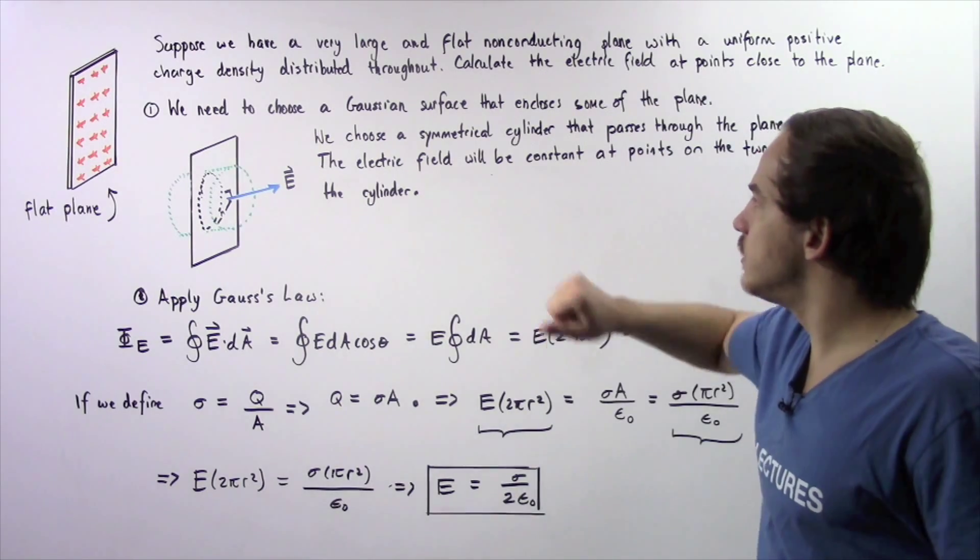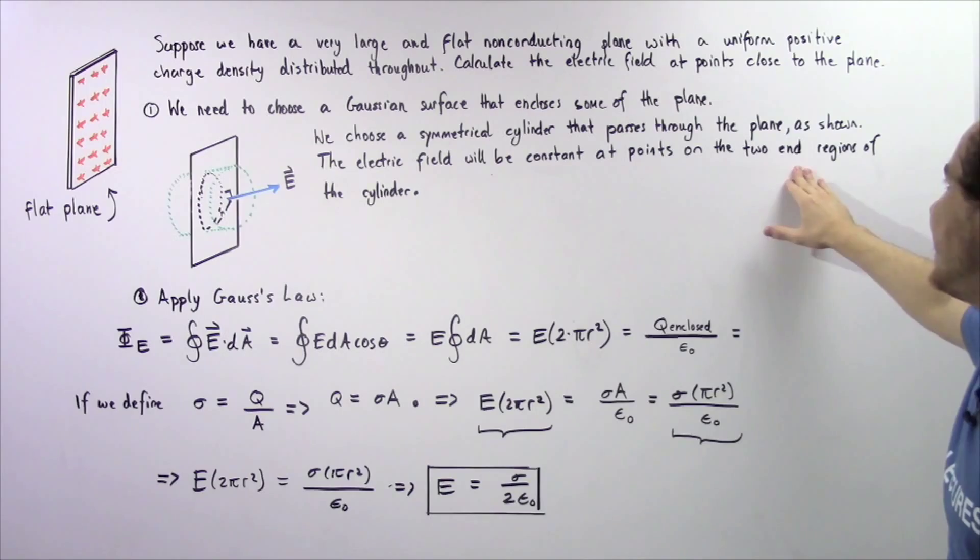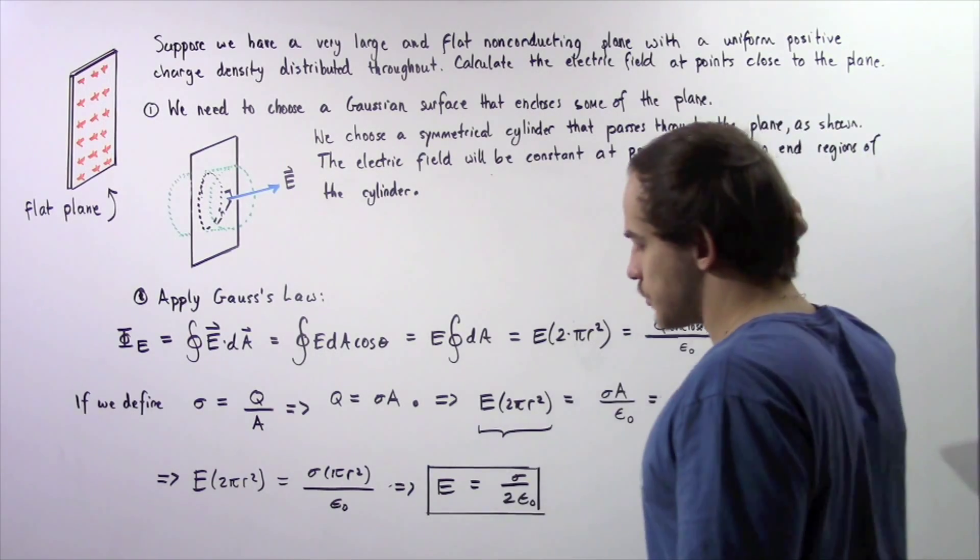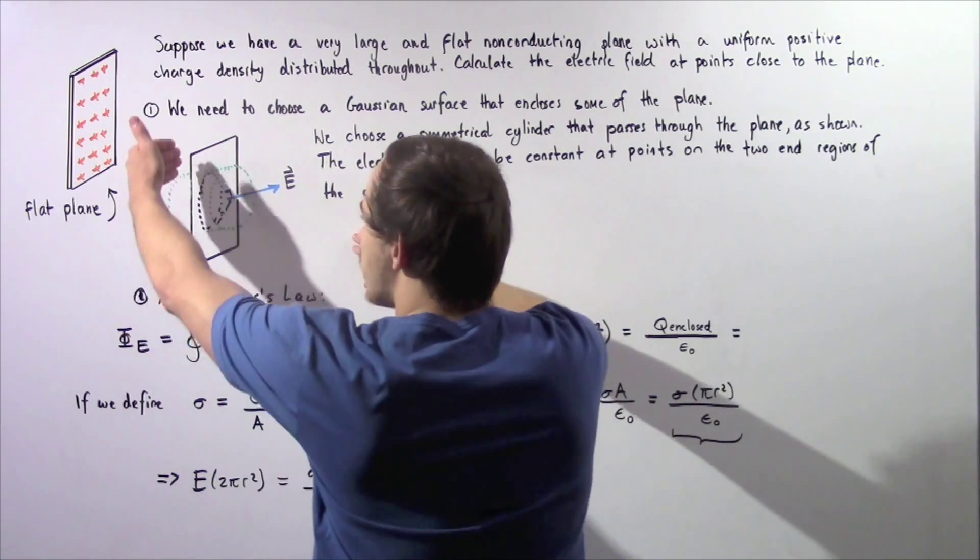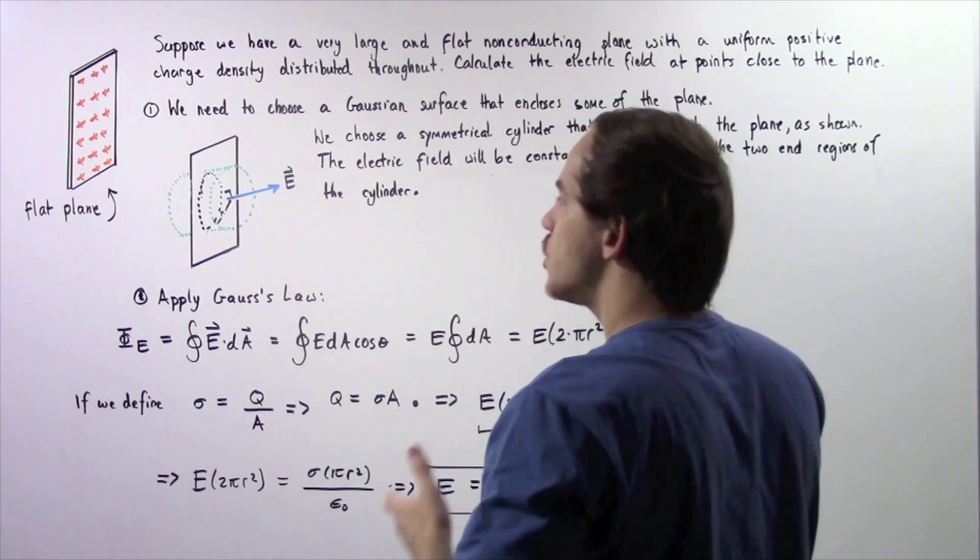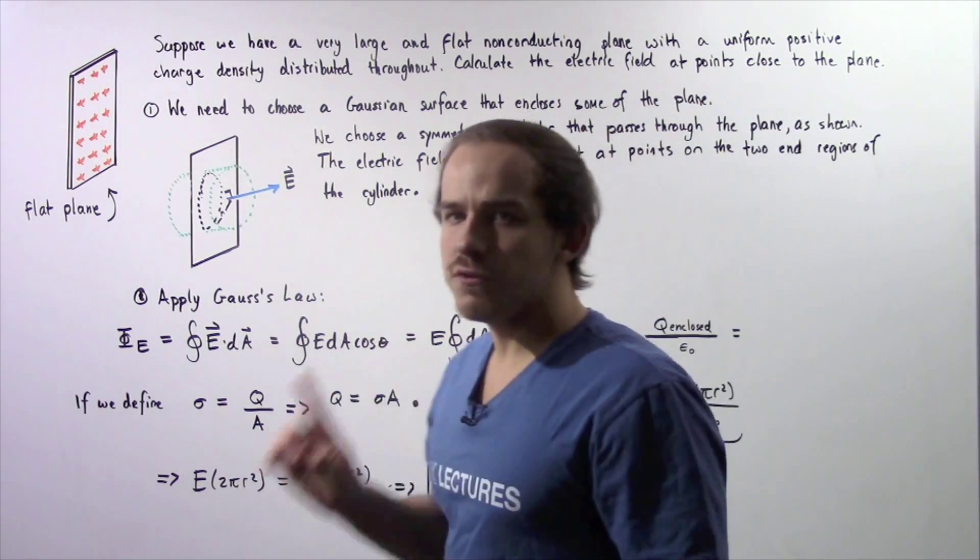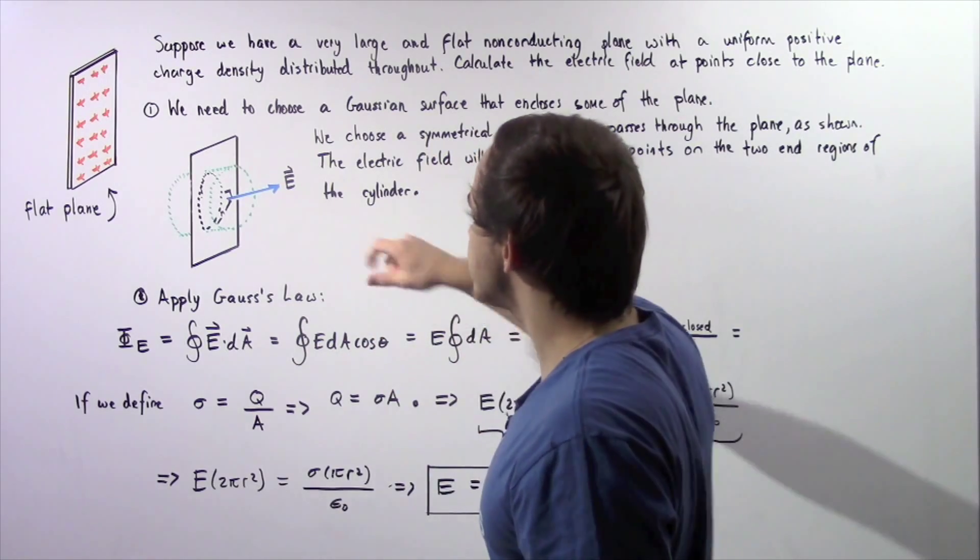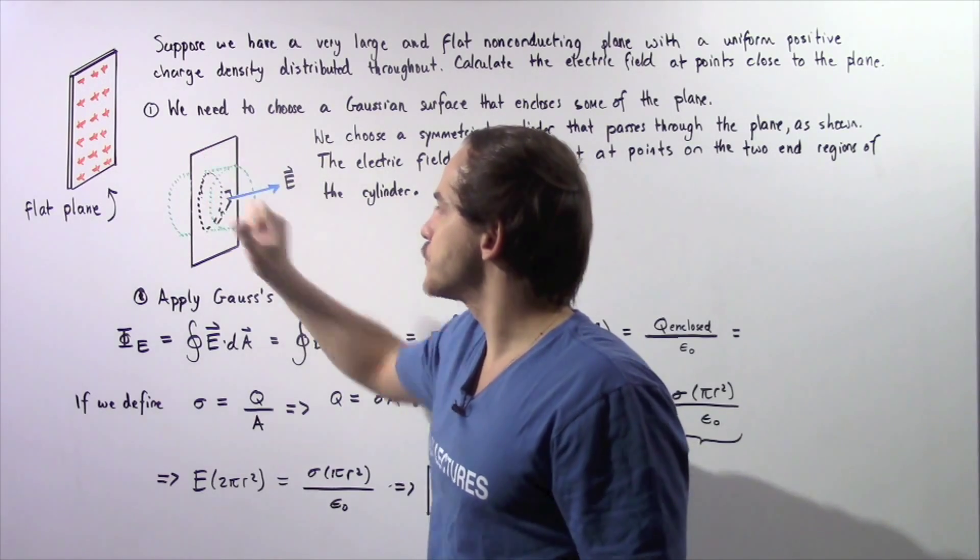The electric field will be constant at points on the two end regions of the cylinder. If we examine this side of the cylinder and the other side of the cylinder that is not shown, those two regions will contain an electric field that will be uniform. It will be constant and it will point perpendicularly with respect to this surface.